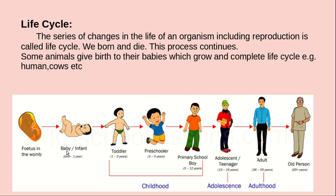The human life cycle stages are: unborn baby, baby, infant, then toddlers, then 3 to 5 years known as preschoolers, then 5 to 12 years primary school boy or girl, then 13 to 19 years teenagers, then 36 to 55 are known as adults, and 65 plus years old persons are known as old persons. These are the stages of human beings.